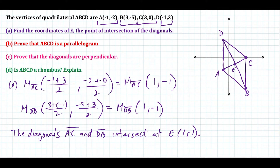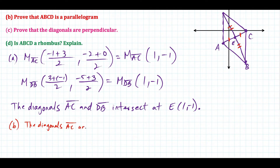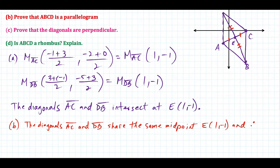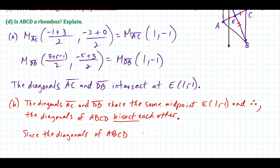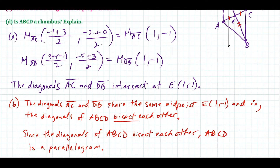For the next part, we want to prove that ABCD is a parallelogram. We already did all the work we need in part A. In a parallelogram, the diagonals bisect each other. Since the diagonals share the same midpoint, the diagonals bisect each other, and if you have a quadrilateral where the diagonals bisect each other, that quadrilateral is a parallelogram. The key phrase is that since the diagonals share the same midpoint, the diagonals bisect each other — then you write your conclusion. The three-dot symbol means 'therefore.'